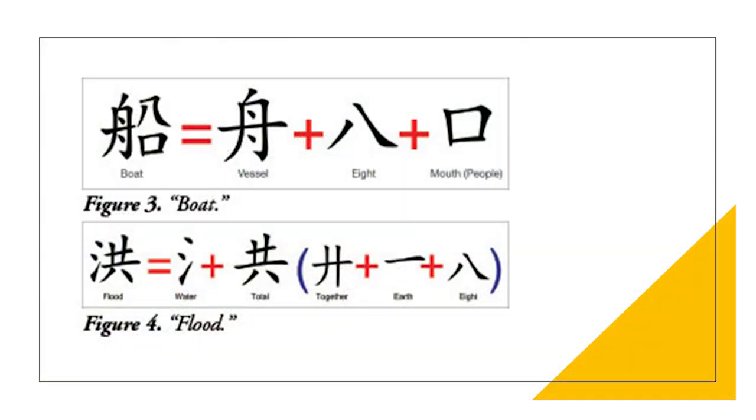It's interesting, in the Chinese language, the word for boat - do you know what it is? It's a little character. It looks like a boat, and it has eight stick figures in it. Guess how many were in the ark? Eight.